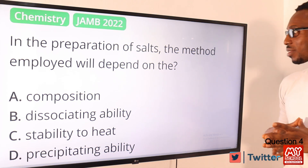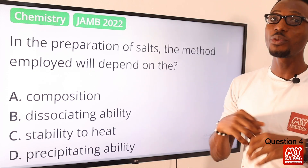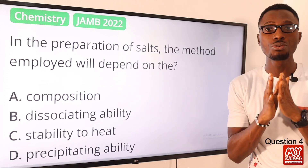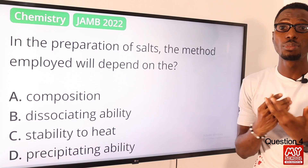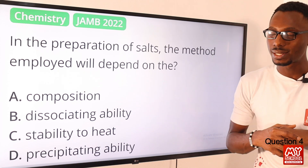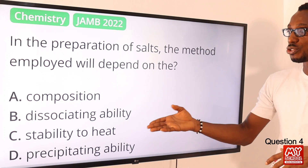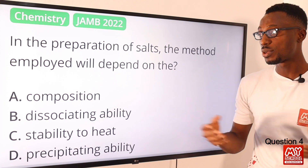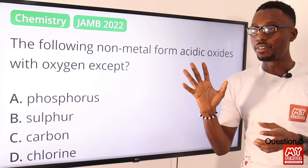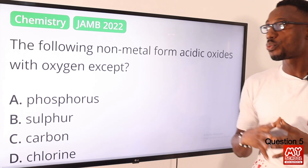Question four: in the preparation of salts, the method employed would depend on what? When preparing salts, we should consider two factors: number one, the solubility of the salt in water, and number two, its stability. We have stability presented here, so the correct option is option C.